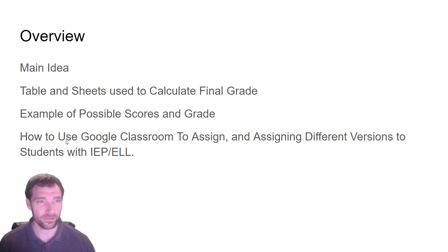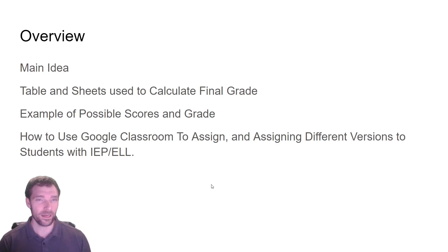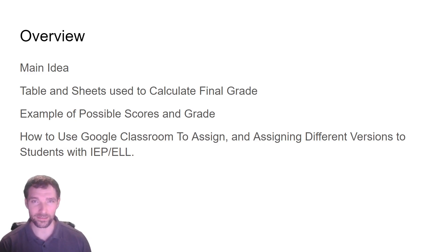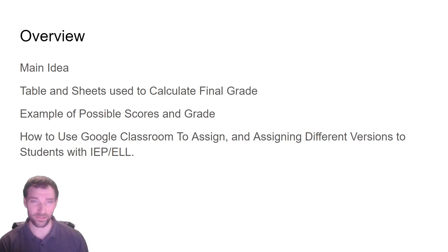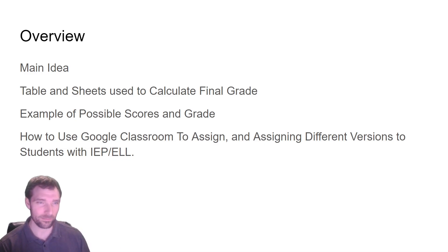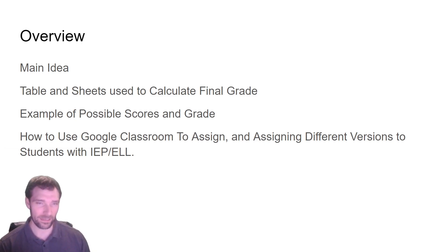There are a couple parts to this video. I'm going to go over the main idea, as well as show you a table and some Google Sheets that you can use to calculate this final grade semi-automatically, though there's a lot of things where it's going to be up to you exactly how the grades are put together. I'll also go through an example and how to assign this in Google Classroom and how you can give different versions to different students.